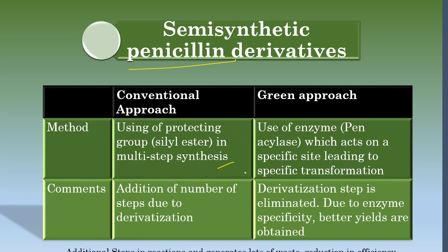Another example is penicillin derivatives. When synthesized conventionally, it is a multi-step synthesis with many derivatization steps. But with a green approach, an enzyme is used, which eliminates the derivatization steps and yields better results. In a nutshell, additional steps in a reaction generate a lot of waste and reduce efficiency. Principle 8 focuses on reducing derivatives — reducing the number of steps involved in making a particular product.